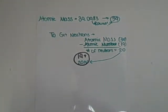The atomic mass is 39.0983. You round this number to the nearest tenth, so it will be 39. To get the number of neutrons, you take the atomic mass minus the atomic number, which is 20. You put this number on the bottom half of the circle with an N beside it.